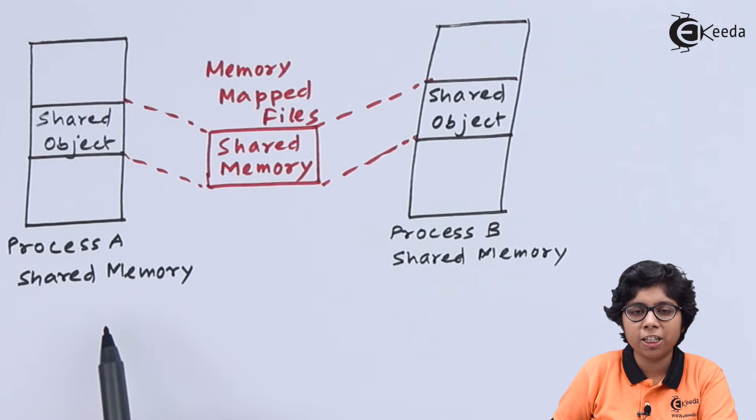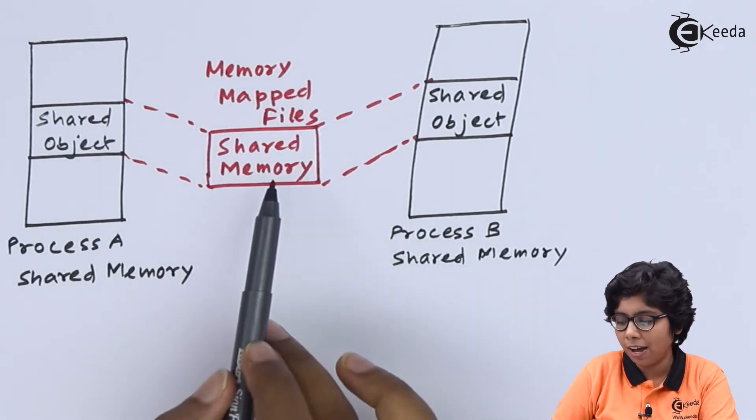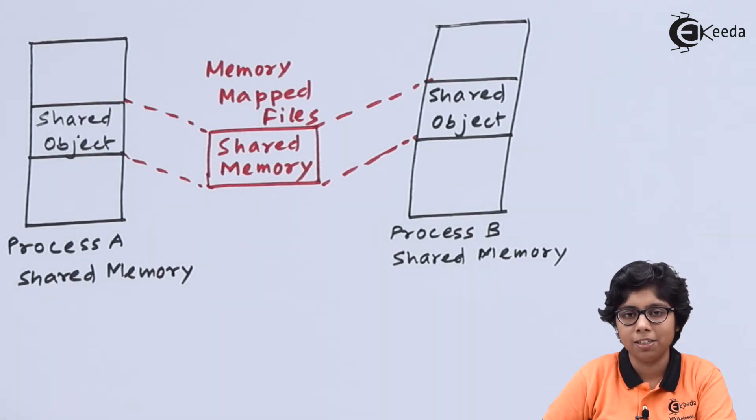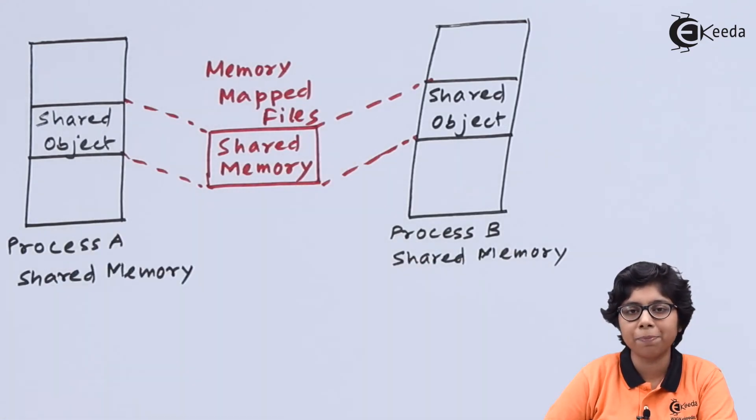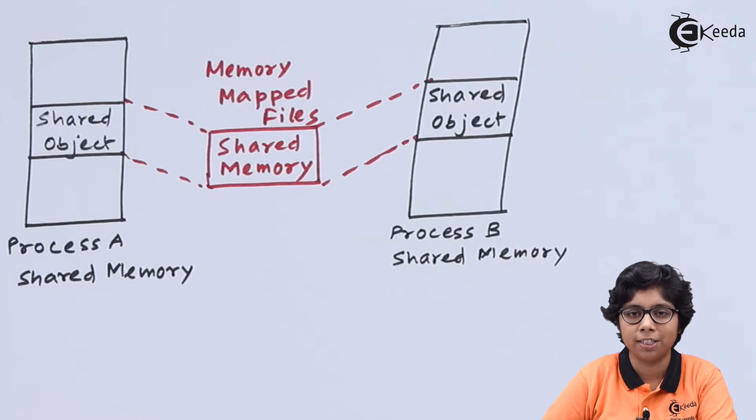Process A has some shared memory on the shared object. Here the memory mapped format is shown on the shared object. Files are also having a shared memory which is shared between process A and process B. In this way, the virtual address space of these memory mapped files is used for the sharing of communication between these processes. So in this way POSIX, Pthread libraries, Windows, Solaris all can do the memory map file operations very smoothly.